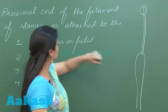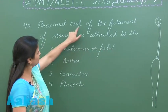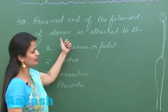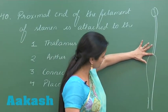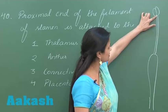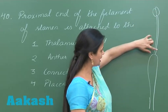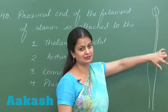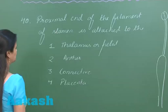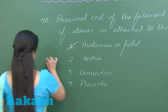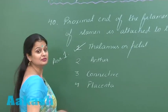The question asks: the proximal end of the filament of the stamen is attached to what? The distal end is attached to the anther, and the proximal end is attached to the thalamus. So the right answer for this question is option number one.